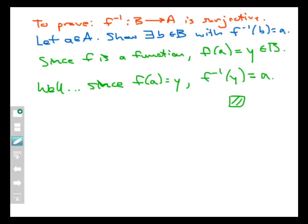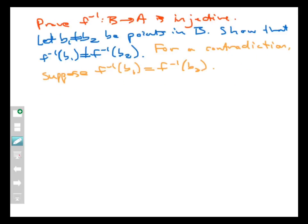Well gosh, that was so easy, we might as well prove that f inverse is injective too. To prove that f inverse is injective, let's suppose that we have two different points in the domain of f inverse. The domain of f inverse is B, so let's call those two points b_1 and b_2. Assume that b_1 is not equal to b_2. I would like to prove that f inverse of b_1 is not equal to f inverse of b_2.